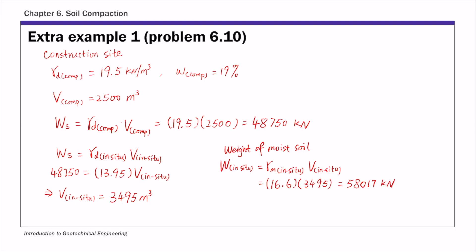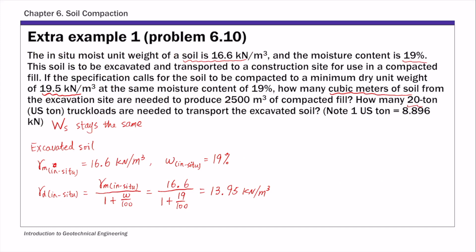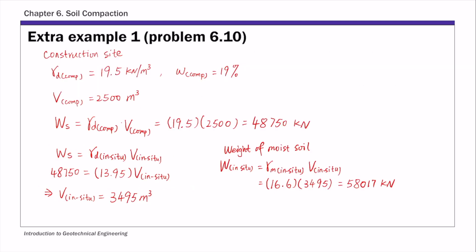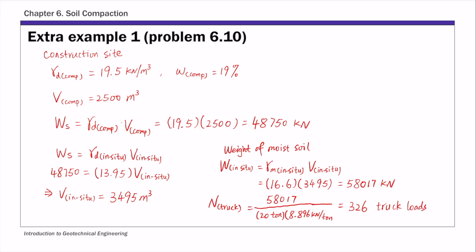Finally, this problem asks for the number of truck loads — how many 20-ton truck loads are needed to transport this much soil. The number of trucks N is simply the total weight, 58,017 kN, divided by the truck capacity: 20 tons, converted to kilonewtons — that's 8.896 kN per ton — giving 20 tons × 8.896 = 177.9 kN per truck. This gives us 326 truck loads needed to transport this much moist soil.